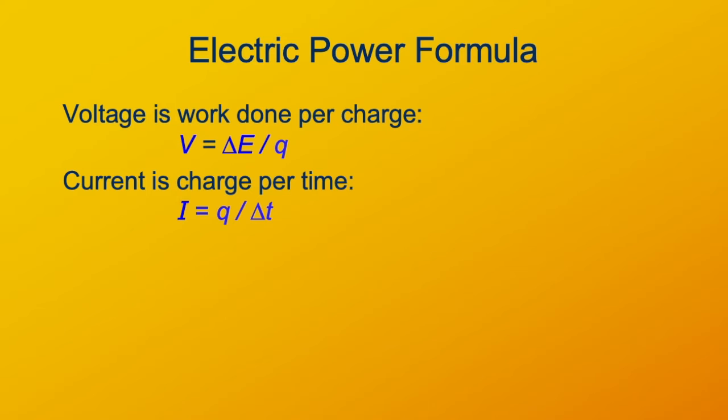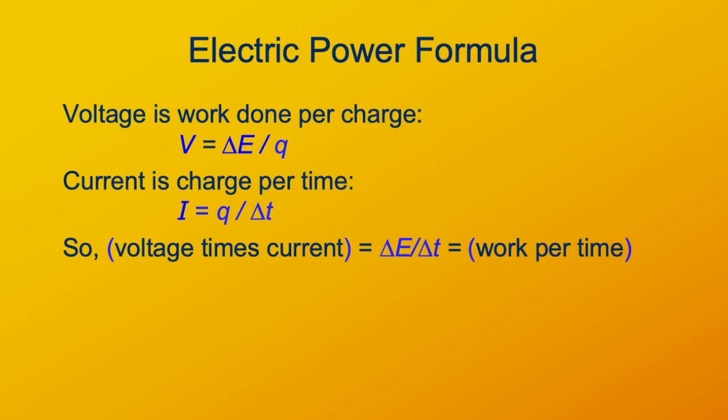The current is coulombs per second. It's charge that goes through some surface per time. So if you want to know how much work is being done per time, well, if you have the work per charge and the charge per time, you can just multiply those together.